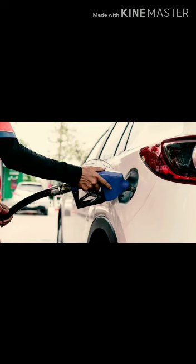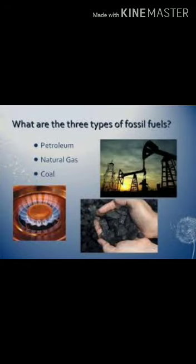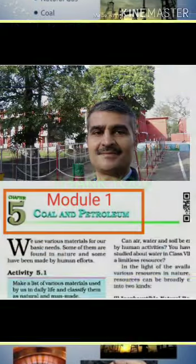On combustion, that is on burning, they produce heat energy which is used for various purposes like cooking, or in industries. Products we get from petroleum like petrol and diesel also undergo combustion and produce energy which is used in vehicles. So they all act as fuel, and as they are formed from the dead parts of plants and animals, they are also called fossils. So the fuels we get from fossils are called fossil fuels — coal, petroleum, and natural gas are called fossil fuels because they are formed from the dead parts of plants and animals.